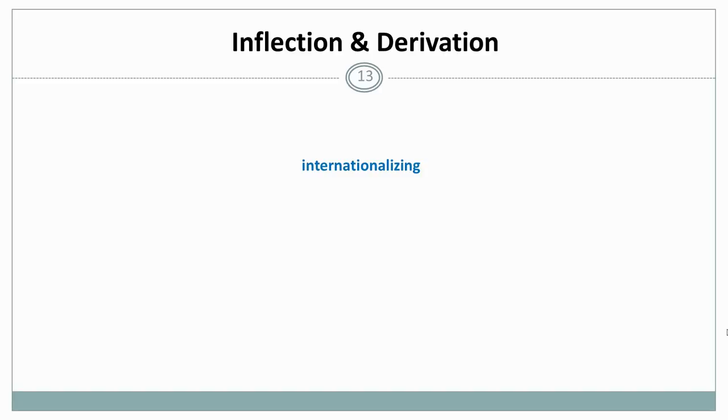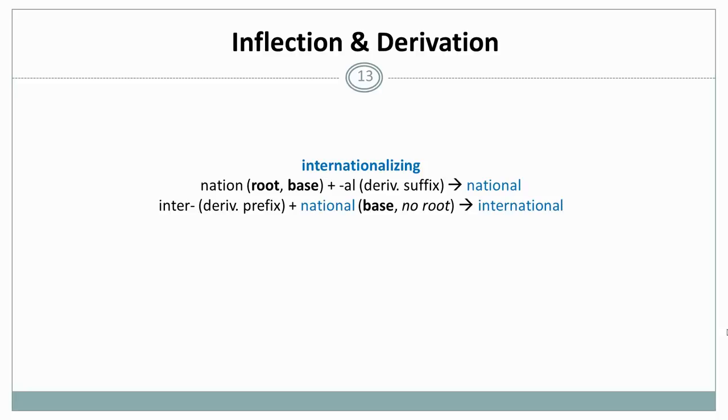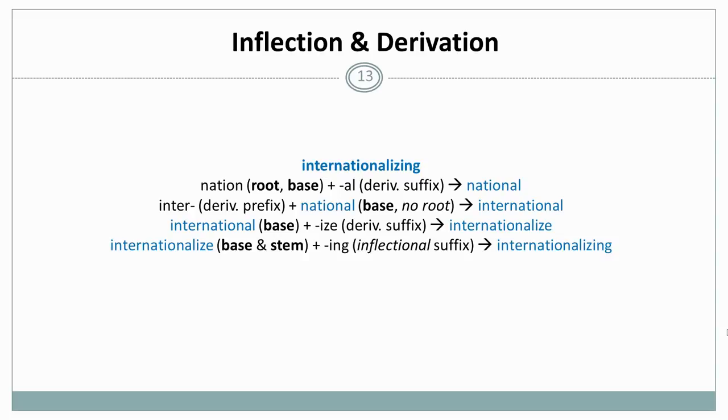Let's look at one example. Let's look at how internationalizing is created. We start with the root nation, which is also the base, and apply the derivational suffix al and get national. Then inter, a derivational prefix, is applied to national, the base. It's not a root anymore because it's complex, it can be subdivided as we just saw into nation and al, and then we get international. To international, the base, we apply ize, the derivational suffix, and get internationalize. And finally, ing, an inflectional suffix, is applied to internationalize. It's a base and also a stem because it's now used in inflection. And then we get internationalizing.